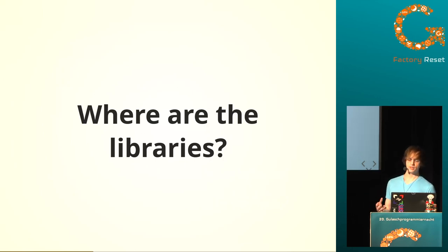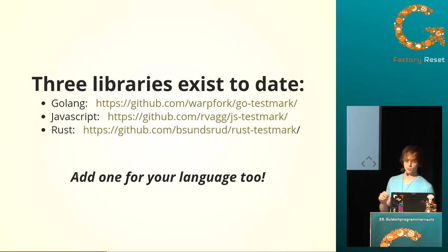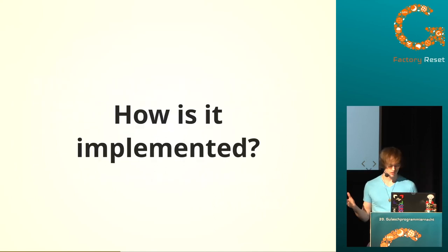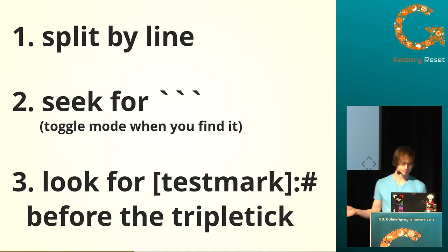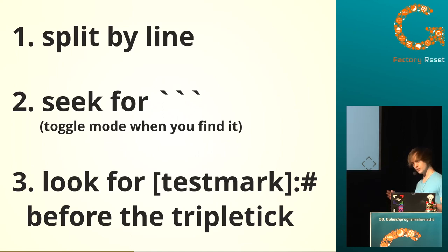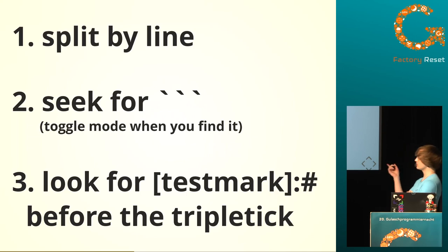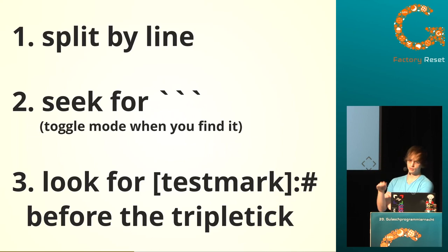Building libraries to process a format like this turns out to be really easy. There are three of them already. If you want Golang, JavaScript, or Rust, there's a TestMark library available which can take those data hunks and make them legible to you. Because parsing this format is easy — you don't need a full Markdown parser. We just need to get the key data out of the middle of the Markdown. Markdown code blocks are pretty easy to find because they're just these triple backticks.